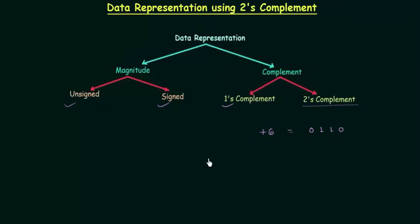Now we will move to negative number representation. In order to represent a negative number, first write the positive number and then take its two's complement. So if you want to represent minus 6, first we have to write down plus 6, and plus 6 is 0, 1, 1, 0. And now we have to take the two's complement of 0, 1, 1, 0.